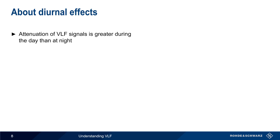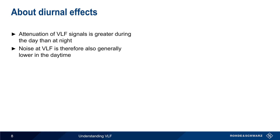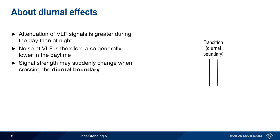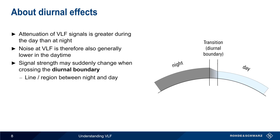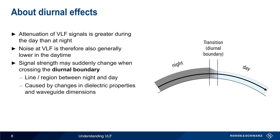Diurnal effects refers to the fact that attenuation of VLF signals is greater during the daytime than at night. Since noise can propagate over great distances at VLF, this higher daytime attenuation means that noise at VLF is generally lower during the daytime. Another diurnal effect involves sudden changes in signal strength when signals cross the so-called diurnal boundary, which is the line or region between night and day. Changes in signal strength are due to changes in the dielectric properties and dimensions of the waveguide, and crossing the diurnal boundary can cause attenuation to change by up to 10 to 20 dB. Note that the day-to-night transition change tends to be more gradual than the night-to-day transition.